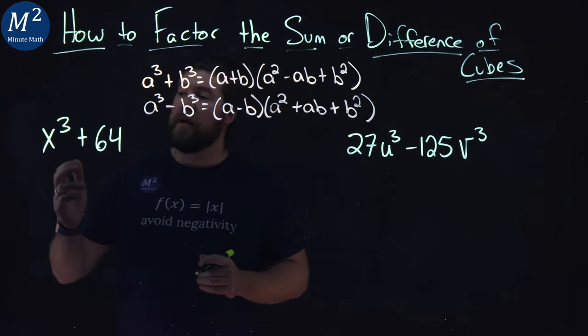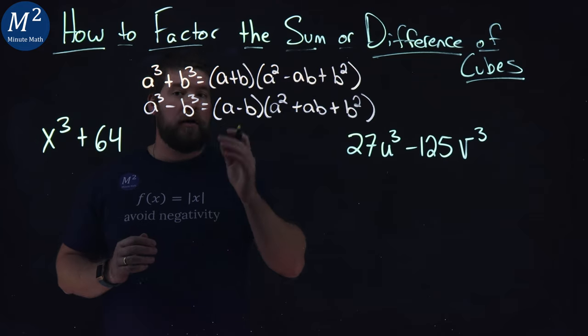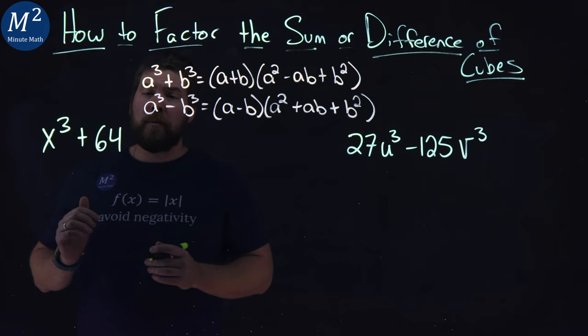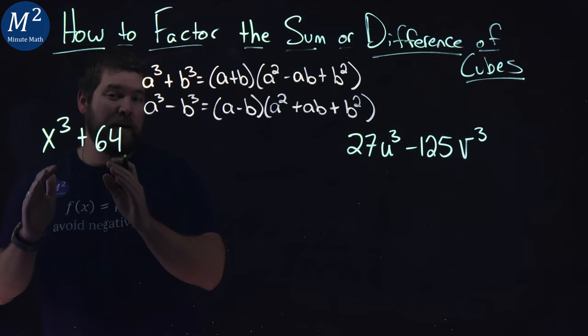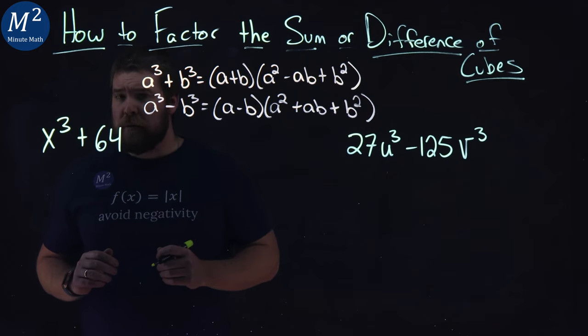Now our first polynomial here is x cubed plus 64. Let's see if we can apply our formula. Our first thing we want to do is rewrite this x cubed plus 64 to look like an a cubed plus a b cubed.